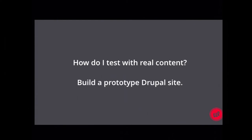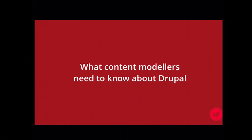Testing also helps identify edge cases and decide what to do about them. Content models are neat and real content is messy — there'll always be pieces of content that don't quite fit your beautifully designed model. The sooner you test with real content and worst-case scenarios, the sooner you'll figure out what those edge cases are. You can then adapt your content model, shoehorn the edge cases in, or create a custom solution. Testing also helps find the gaps — places where you need a reference field to create a relationship between two bits of content but haven't put it anywhere. For me, there's no substitute for doing this on a real Drupal site.